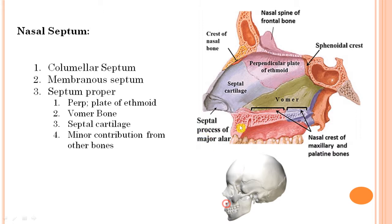Moving ahead, the nasal septum is divided into three parts. First is the columnar portion — the columnar septum. Then there is a small portion called the membranous septum that lies in between the septal cartilage and the columnar septum. And finally we have the septum proper. So: columnar septum, membranous septum, and septum proper.